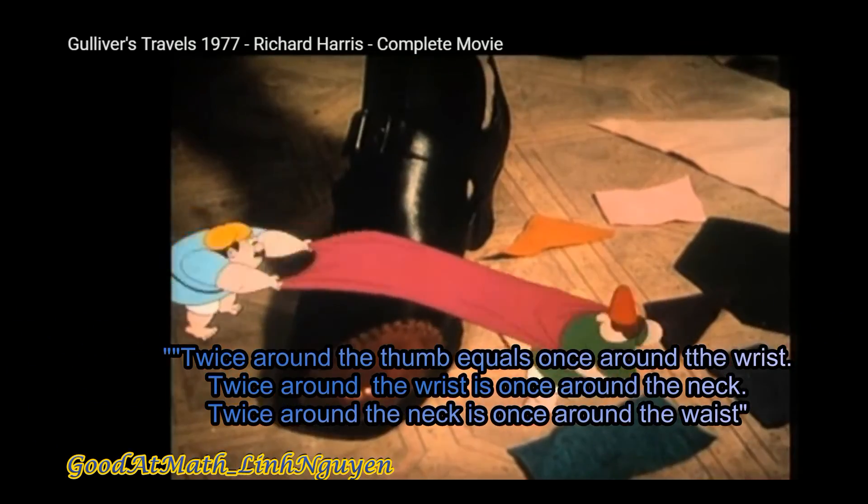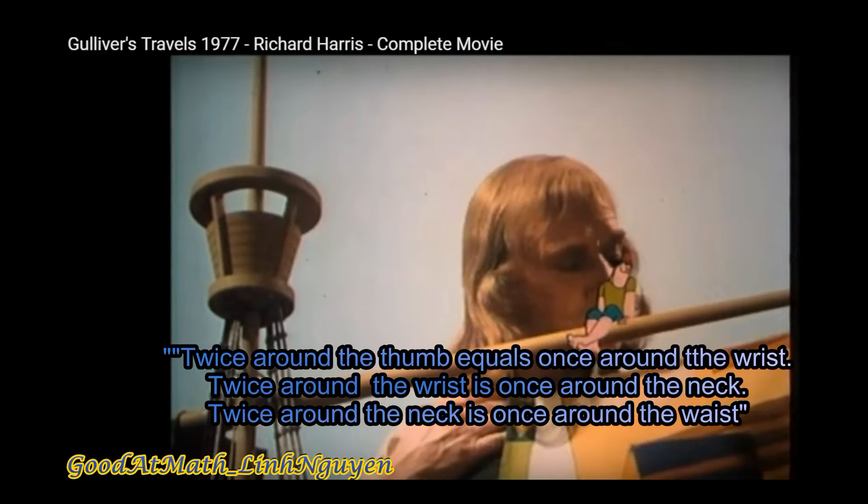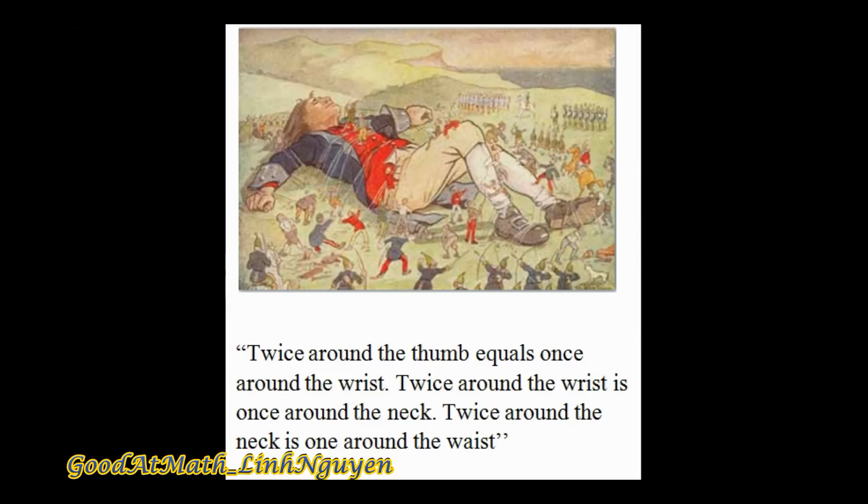He said twice around the thumb equals once around the wrist. Twice around the wrist is once around the neck. Twice around the neck is once around the waist.